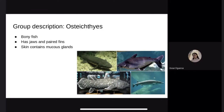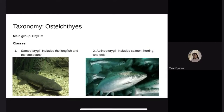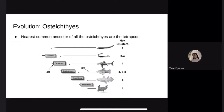We'll be moving on to Osteichthyes, known as bony fish. They have jaws, paired fins, and mucous glands on their skin. Taxonomy: Osteichthyes are part of the phylum Chordata, and two of the most popular classes are Sarcopterygii and Actinopterygii. Sarcopterygii include the lungfish and the coelacanth. Actinopterygii include salmon and others. The nearest common ancestor of all Osteichthyes are the tetrapods. Hox clusters are a group of related genes that specify the region of the body plan of an embryo along the head-tail axis of animals.